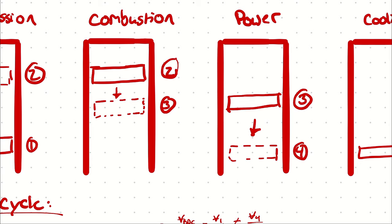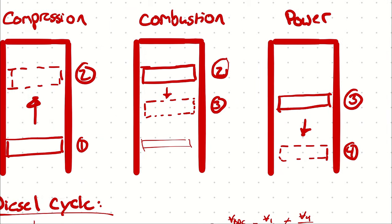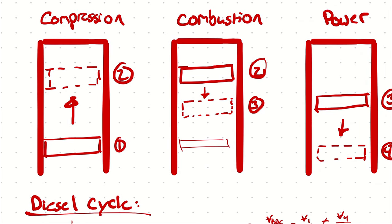If the combustion process expanded all the way back to where it started, which by the way, would be like the worst diesel cycle ever because there would be nothing left to do in the power stroke. You'd be getting all your power in the combustion process, not the power stroke, which is not what you want. That would be the most expansion that could occur, which would be the proportion that the compression ratio was.